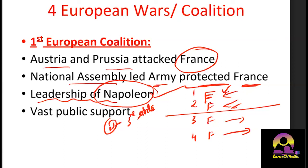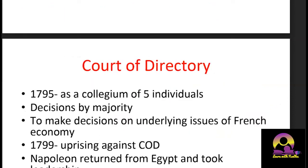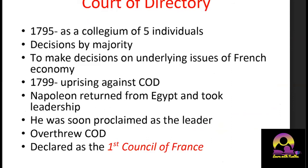Napoleon slowly emerged into a very powerful figure in France during the First Coalition. You don't need to remember all the specific dates — just remember that the French Revolution started in 1789 and everything follows after that. Having a rough idea of which decade events occurred in is sufficient. The key point is the emergence of Napoleon's leadership from the First Coalition.